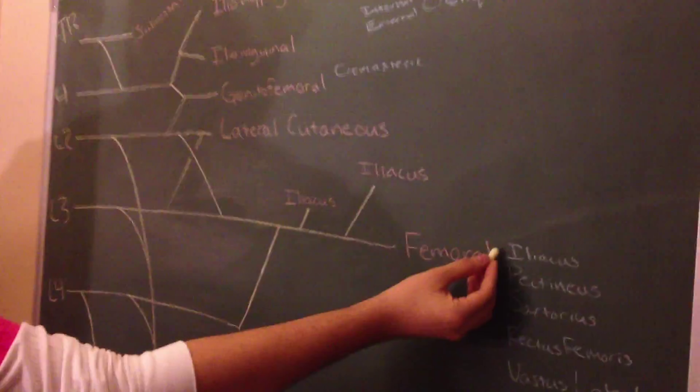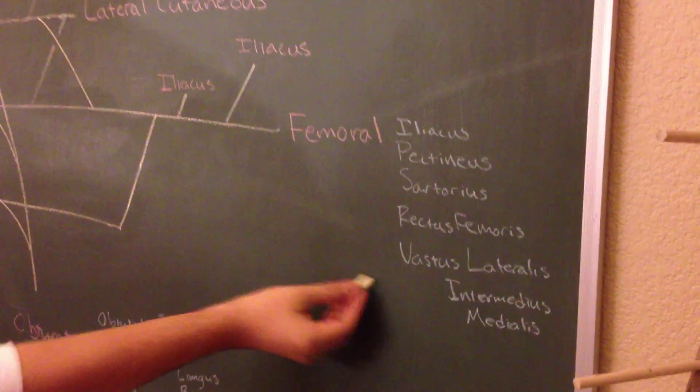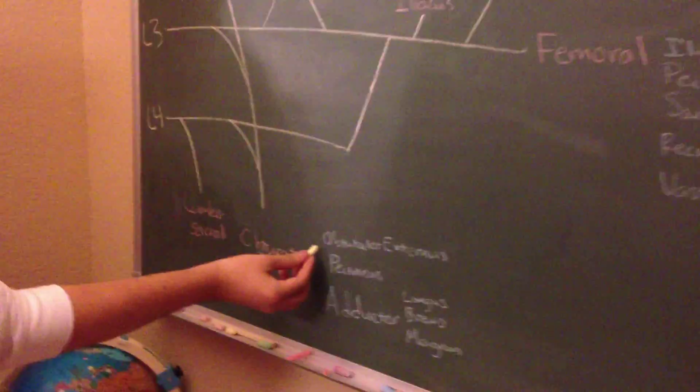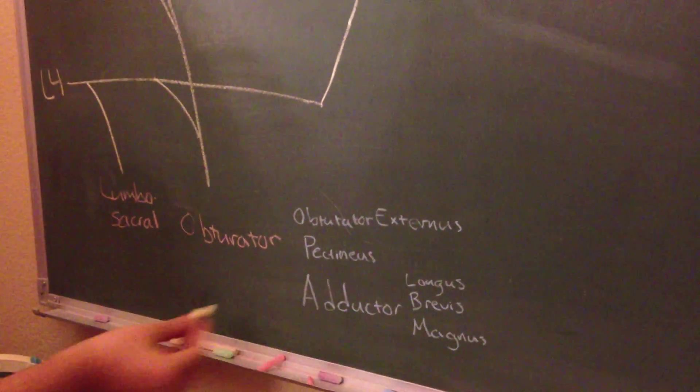Femoral nerve is going to be iliacus, pectineus, sartorius, and your quadriceps muscles. Finally, the obturator is going to be the obturator externus, pectineus, and all of your adductor muscles, the longus, brevis, and magnus.